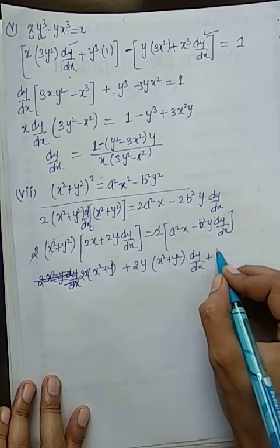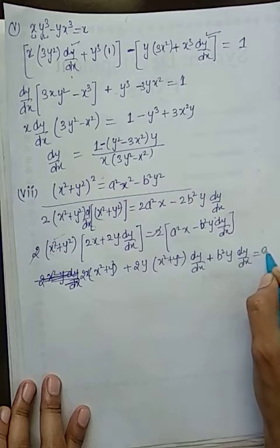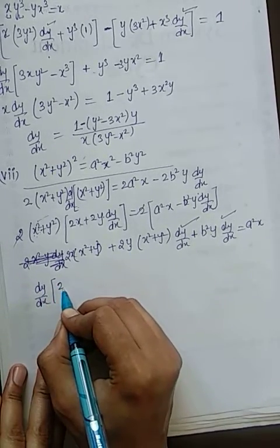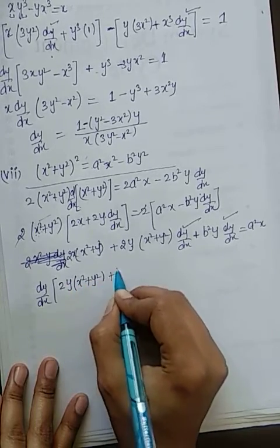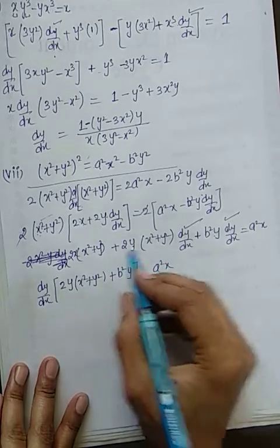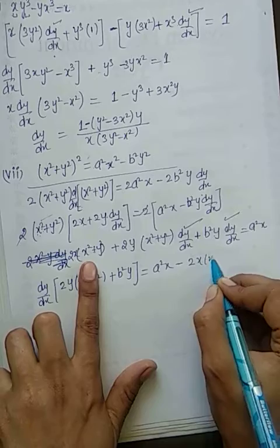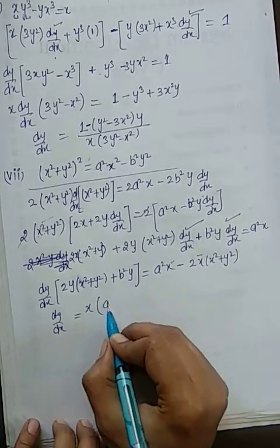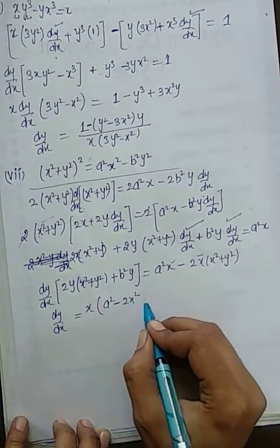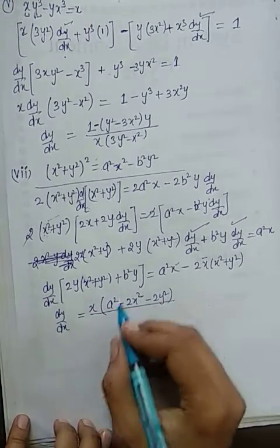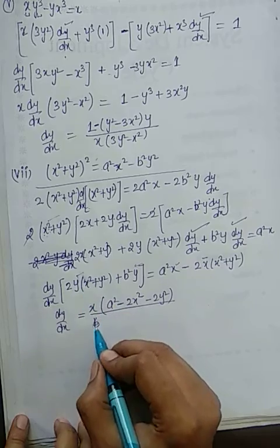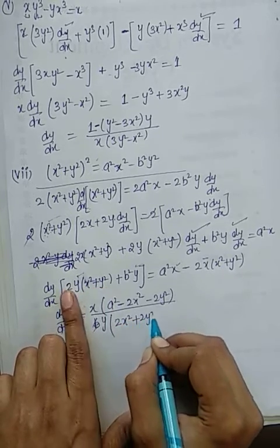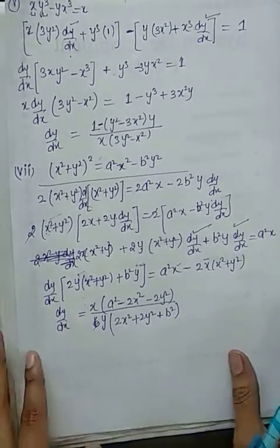Terms left me le renge, it will be plus b²y·dy/dx = a²x. Now take dy/dx common. You're left with 2y(x² + y²) + b²y = a²x minus this is 2x(x² + y²). So dy/dx will be equal to, x common le sakte ho, so it will be a²x - 2x² and minus 2y² upon y. Taking y common from denominator, it will be 2x² + 2y² + b².